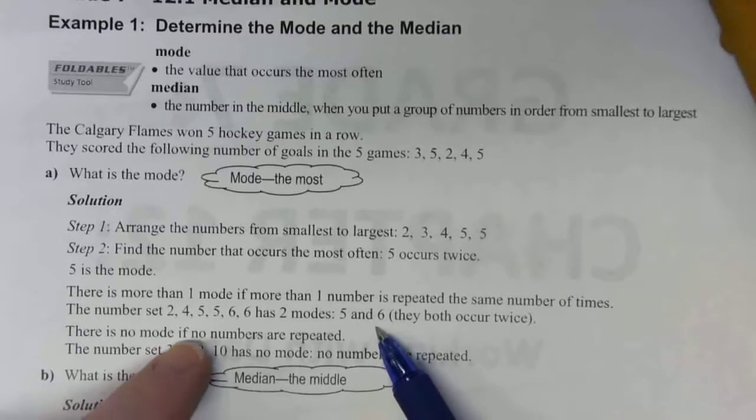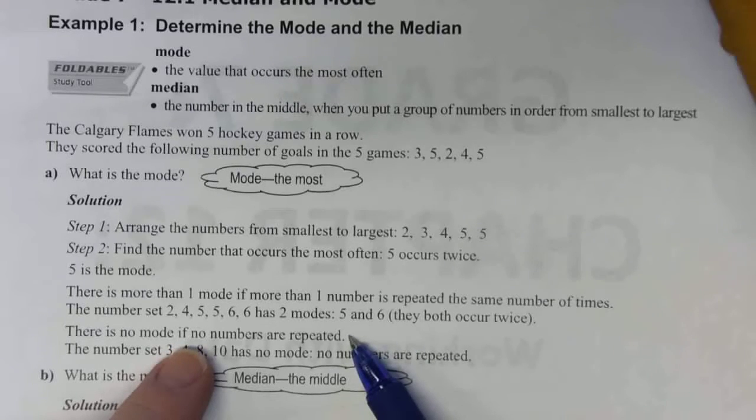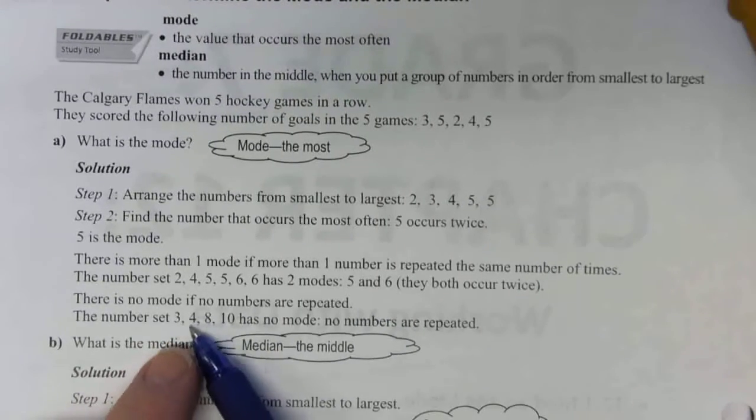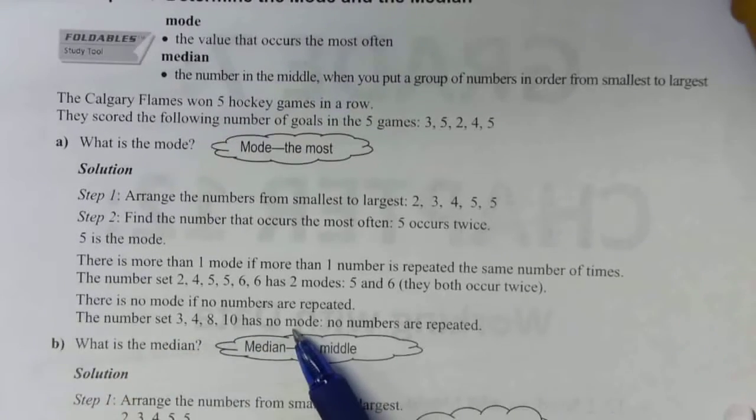Now, if there are no numbers that are repeated, that means there's no mode. There has to be repetition for there to be a mode. So in this set of four digits—3, 4, 8, and 10—nothing is repeated, so there is no mode.